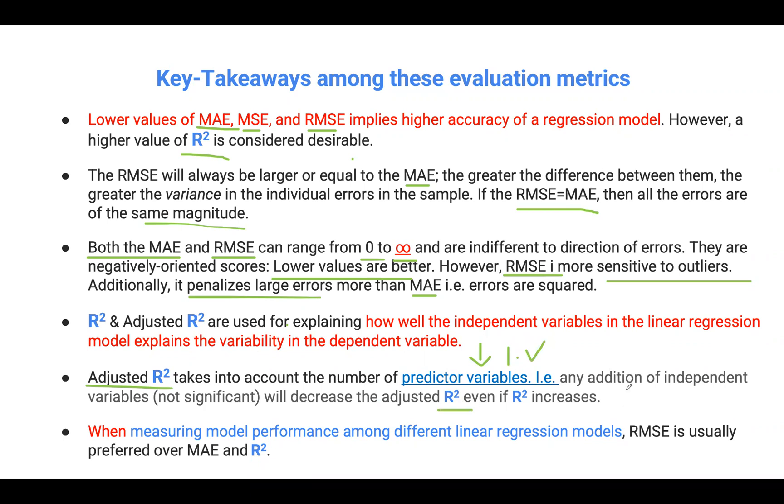R squared has a tendency of showing a very high value, especially when there's an increase of independent variables. So adjusted R squared tries to penalize any addition of independent variables, especially those that are not relevant or significant.